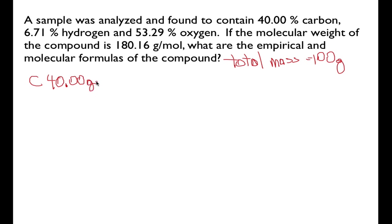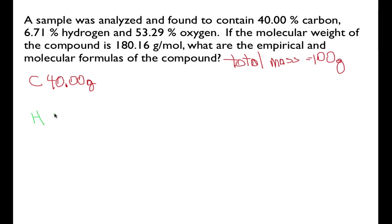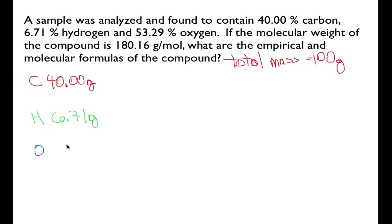We can do the same thing for the rest of the elements. If our sample is 6.71% hydrogen and it's a 100-gram sample, that means our sample must contain 6.71 grams of hydrogen. And for oxygen, if we have a 100-gram sample and 53.29% of it is oxygen, then we must have 53.29 grams of oxygen.